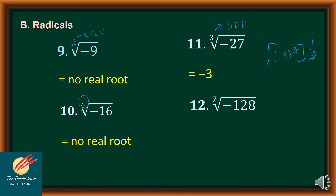Similarly, for number 12, the 7th root of negative 128: 7 is an odd number, so I can express negative 128 as negative 2 to the 7th power. Writing the 7th root of negative 128 in exponential form gives negative 2 raised to 7, raised to 1 over 7. Factoring out 7 gives the answer negative 2.